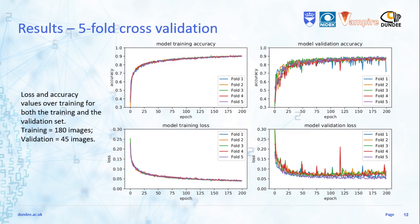The image reports the training and validation loss and accuracy values over the five folds of the experiment. The graphs suggest that the network can effectively generalize the information learned from the training set to the validation set. By comparing the mean validation and test accuracy values — respectively equal to 87% and 88% — we can confirm the network's generalization capabilities.